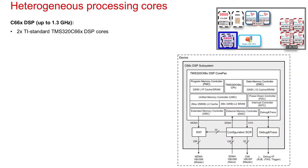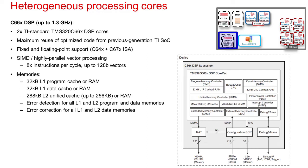The Jacinto 7 SoC also includes up to two instances of the previous generation TI digital signal processing core, the C66X DSP. Inclusion of these cores allows users to directly reuse highly optimized code from previous generation TI SoCs, such as mature vision algorithms, audio processing algorithms, or digital radio code. The Jacinto 7 configuration of the C66X runs up to 1.3 GHz and enables additional error correction and detection on the cache and memory systems, capabilities not present on all previous TI automotive processors. It also provides a region address translator which allows extension of the C66X DSP access into the full memory space of the device despite being a 32-bit native processor.